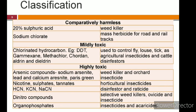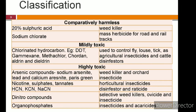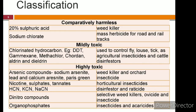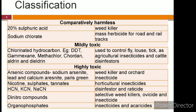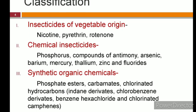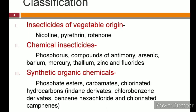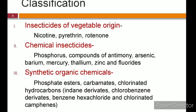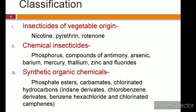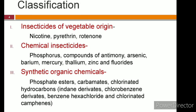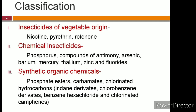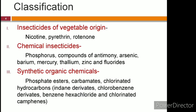Highly toxic chemicals include arsenic compounds like sodium arsenite, lead and calcium arsenite, Paris green, nicotine, sulfates, tannates, hydrocyanic acid, dinitro compounds, and organophosphates. There is another classification based on origin: vegetable origin like nicotine, pyrethrin and rotenone; chemical insecticides like phosphorus, compounds of antimony, arsenic, barium, mercury, thallium, zinc, and fluorides; or synthetic organic chemicals like phosphate esters, carbamates, and chlorinated hydrocarbons.